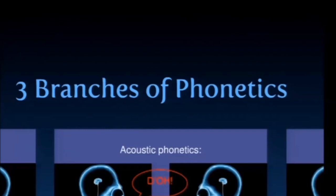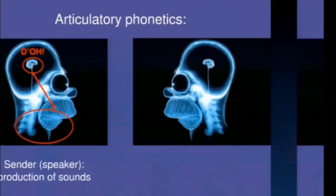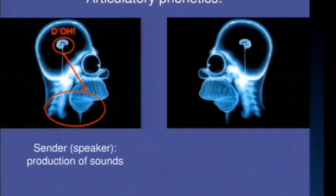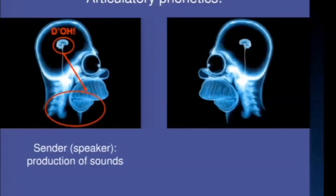So how does phonetics tie into that? As a first part, we can look at what the sender is doing — the articulation process, how he or she produces sounds. It all starts in the brain, and then muscles are used and you produce a sound. This is what articulatory phonetics looks at. It's the sender's perspective.